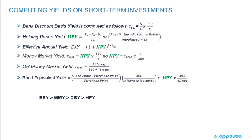The bank discount yield is the discount over face times 360 over T. The holding period yield for money market instruments is just the face value minus the purchase price divided by the purchase price. The effective annual yield is 1 plus the holding period yield to 365 over T. The money market yield is the holding period yield times 360 over T, or equivalently, the holding period yield equals the money market yield times T over 360.